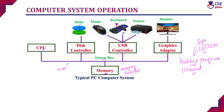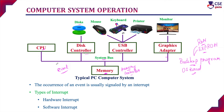The occurrence of an event is usually signaled by an interrupt. When the device driver or any of the input/output devices wants to perform any task, an event will be created and this event is usually signaled by an interrupt. There are two types of interrupt: hardware interrupt and software interrupt. A hardware interrupt triggers the interrupt by sending a signal to the CPU through the system bus. A software interrupt is triggered by executing a special operation called a system call.